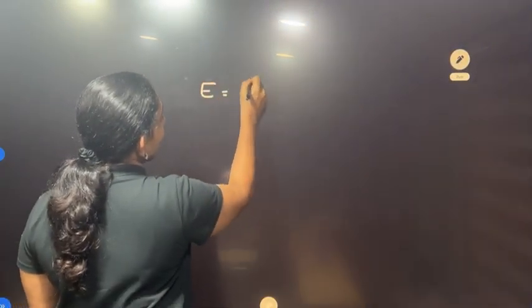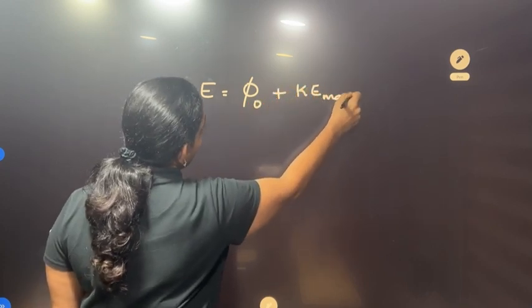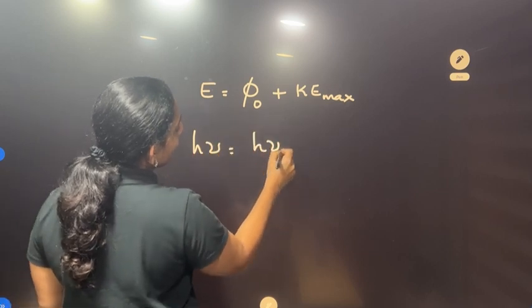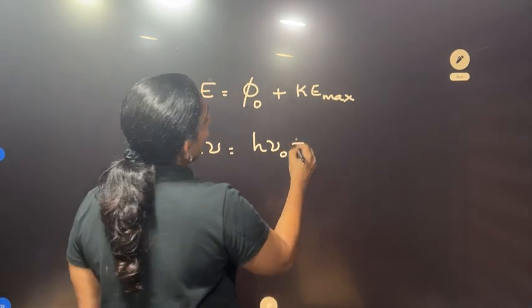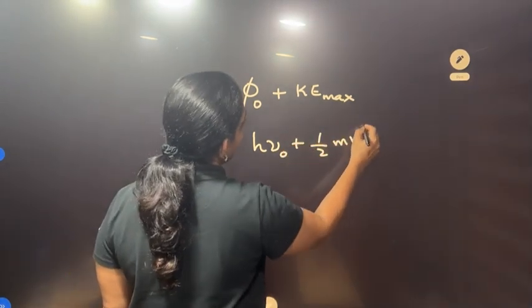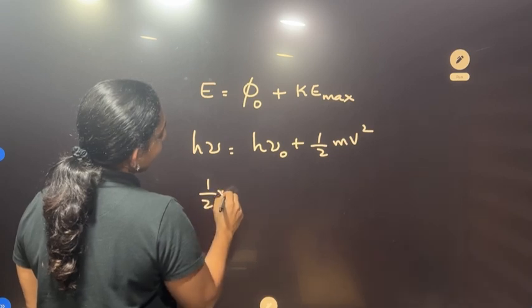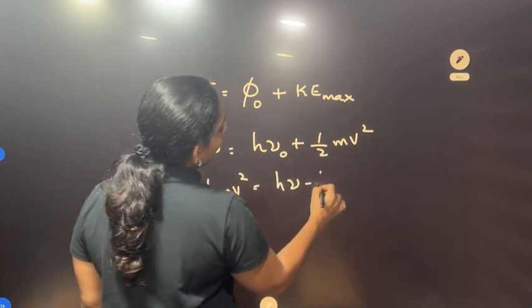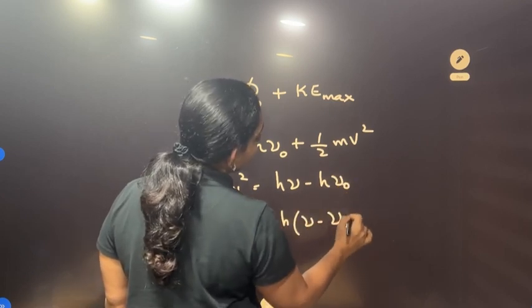Einstein's photoelectric equation: energy given by the incident radiation is equal to work function plus kinetic energy, KE max. Energy is equal to h-nu. H-nu is equal to h-nu-0 plus KE max.